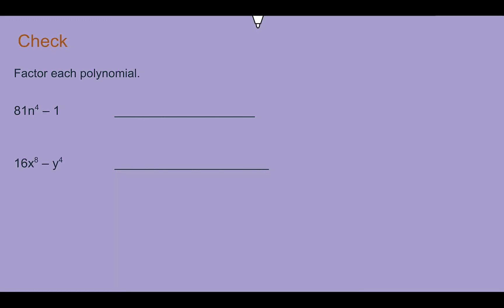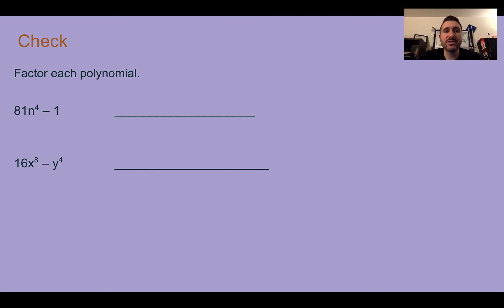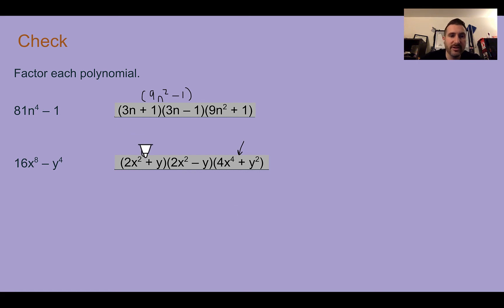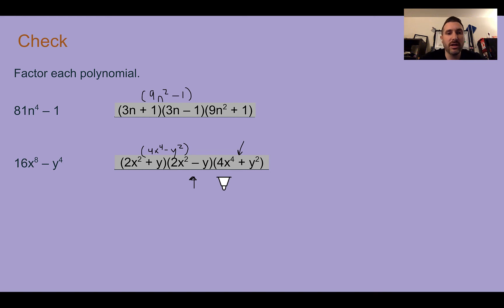Check your understanding: factor each polynomial. Pause the video now and complete the check. Check your answer. In the first one, after you factor the first time, you get 9n squared plus 1 and 9n squared minus 1. This second part is still a perfect square, so it becomes 3n plus 1 and 3n minus 1. For the second problem, we end up with 4x to the fourth plus y squared and 4x to the fourth minus y squared — another difference of squares — giving 2x squared plus y and 2x squared minus y. The first part cannot be factored further since there's no perfect square there. If we had started with y to the eighth, we could keep going, but it can get complicated.